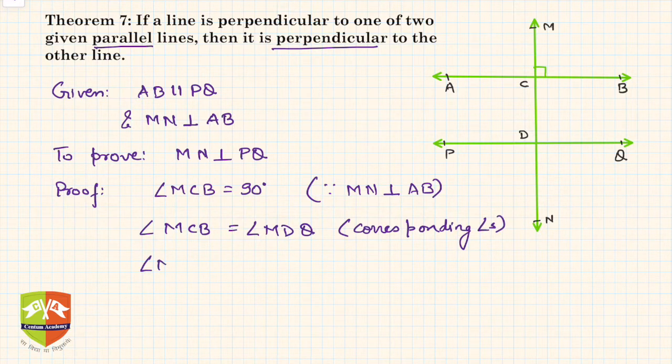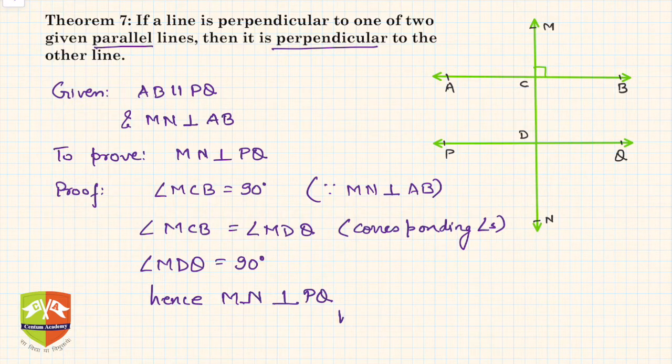So that means what? Angle MDQ is also equal to 90 degrees. Why? Because MCB was 90 degrees. Hence MN is perpendicular to PQ as well. Hence it is proved.